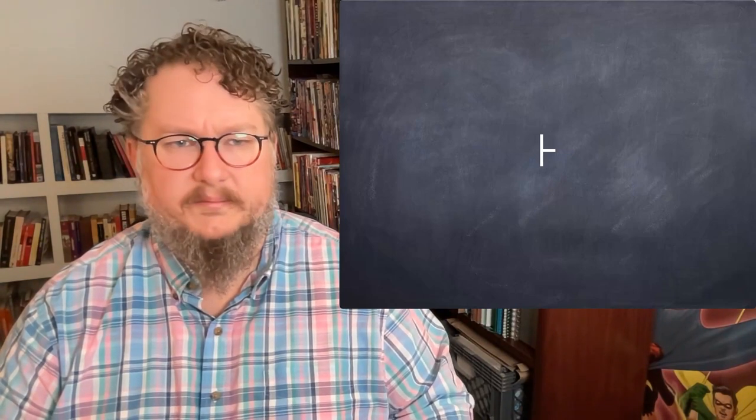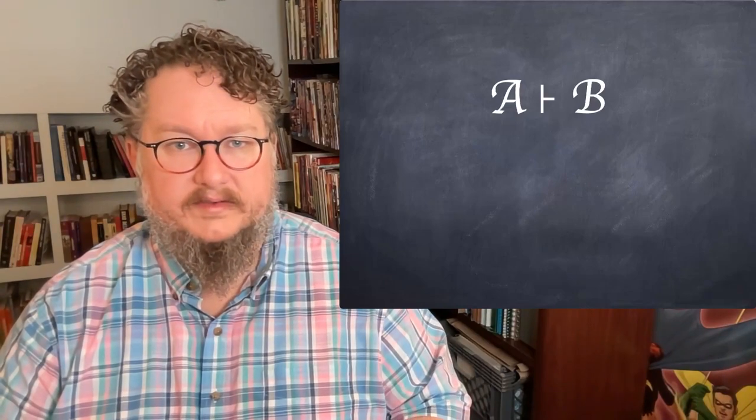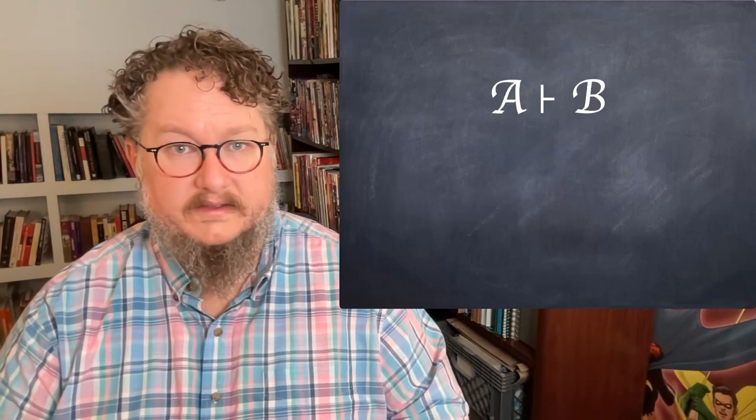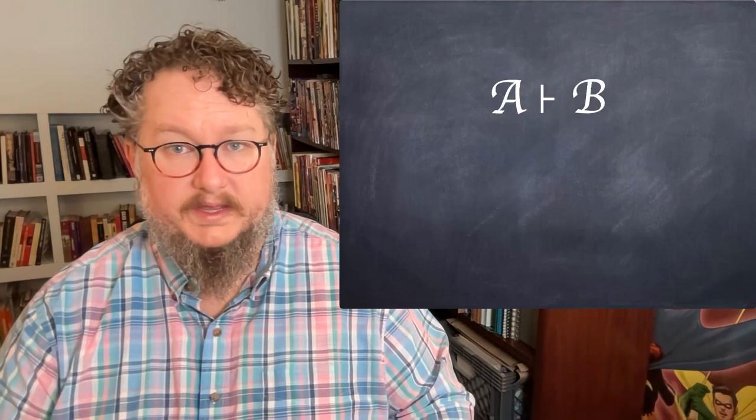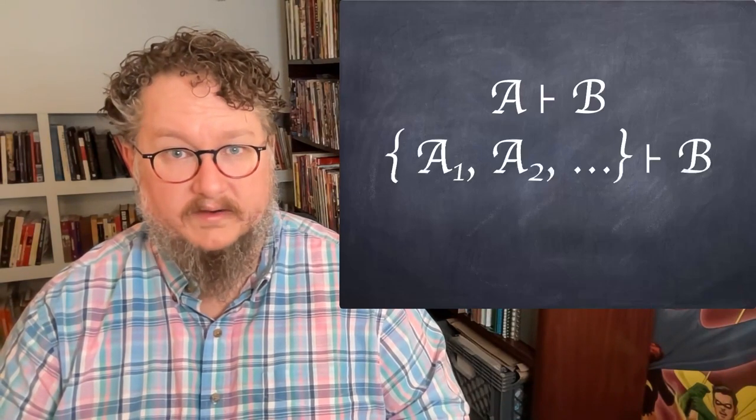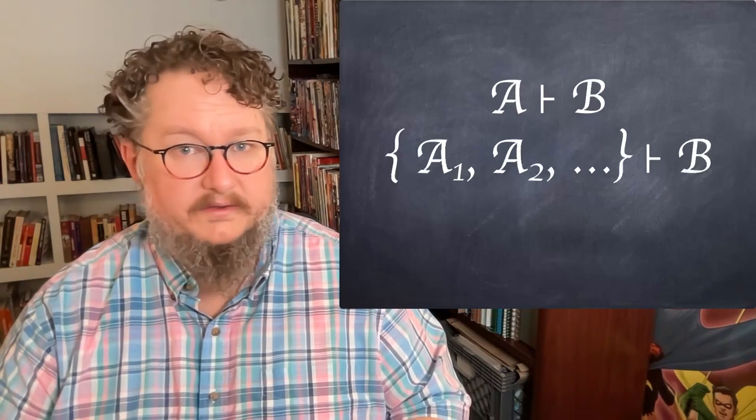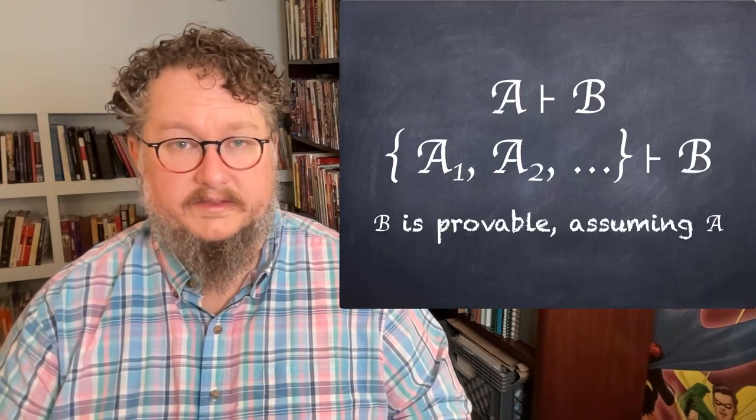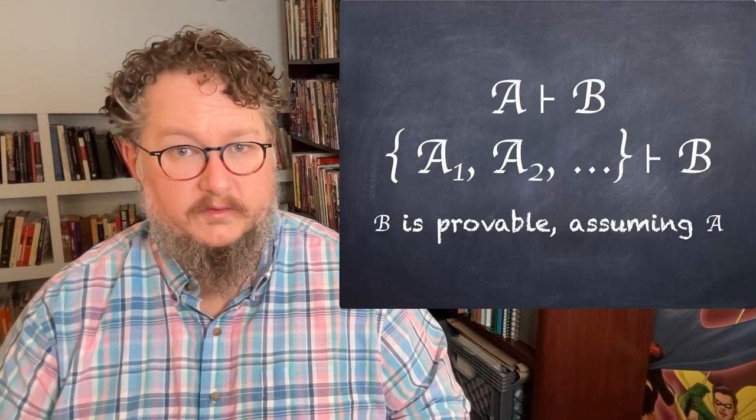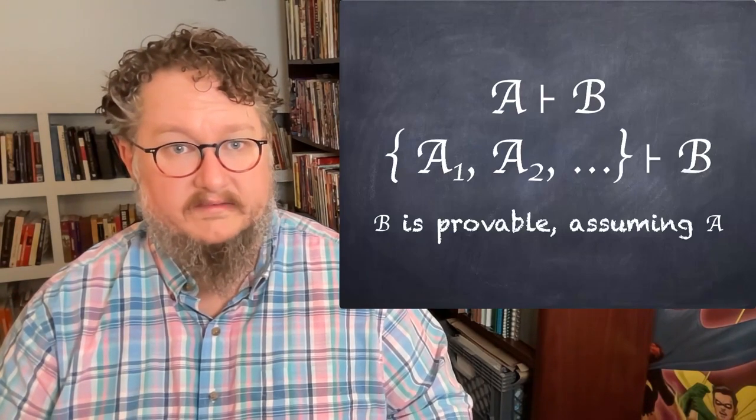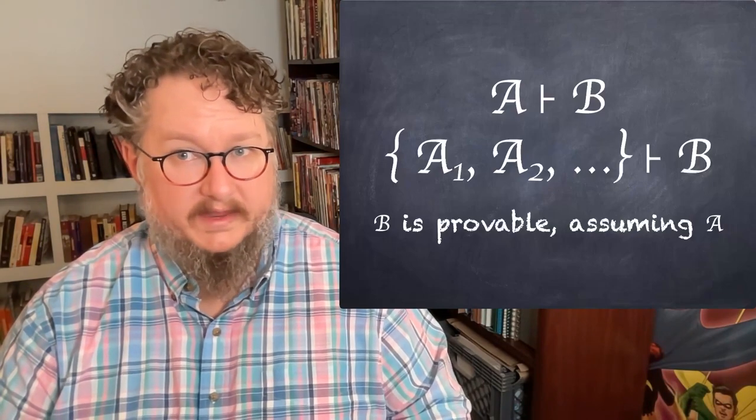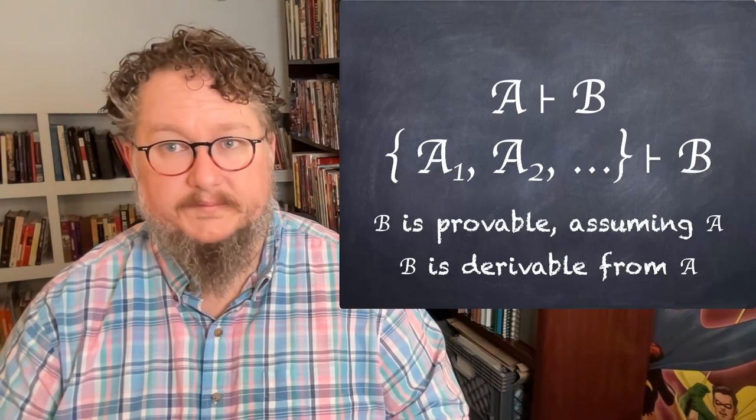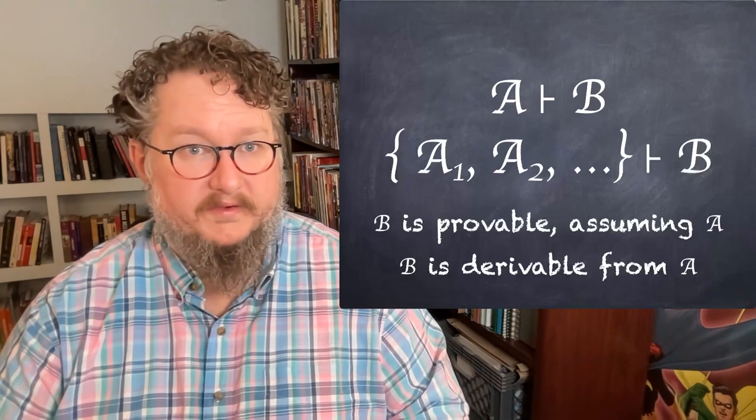So what do I mean that this means a proof is possible? Suppose you have A turnstile B. I have some sentence A, some sentence B. This means that we can prove B on the basis of A. Or we might have a whole set of sentences A1, A2, A3, etc., and on that basis we can derive B. So the turnstile here means that B is provable assuming A or on the basis of premises A or A1, A2, etc. Or we say it's derivable from A. To say it's derivable is to say we've provided a proof.